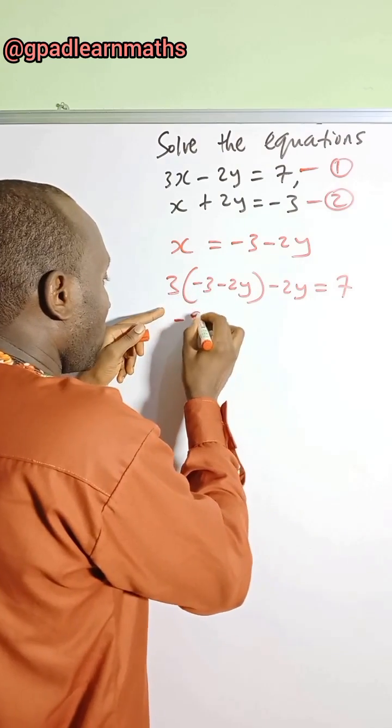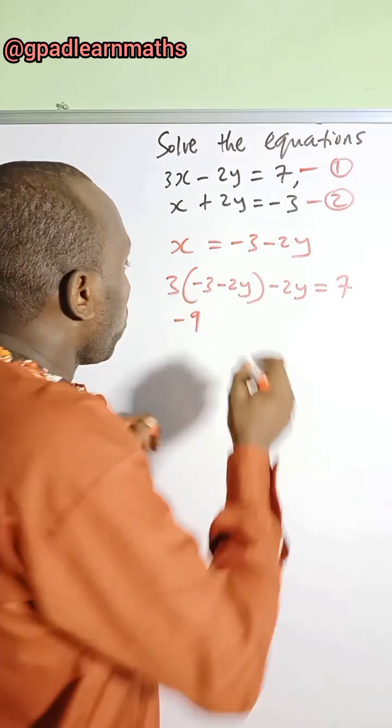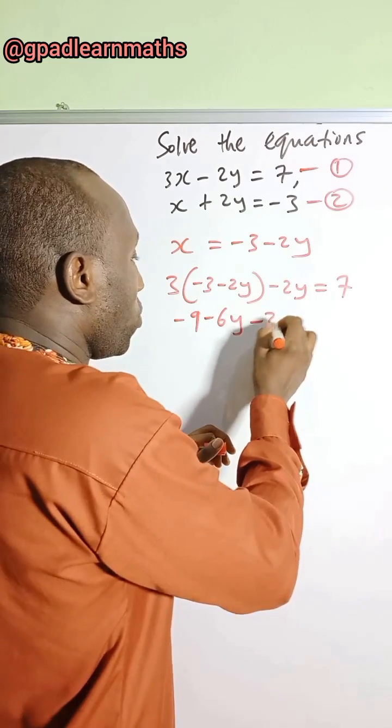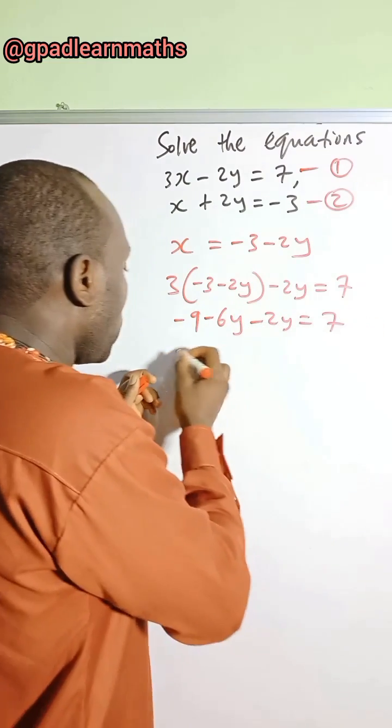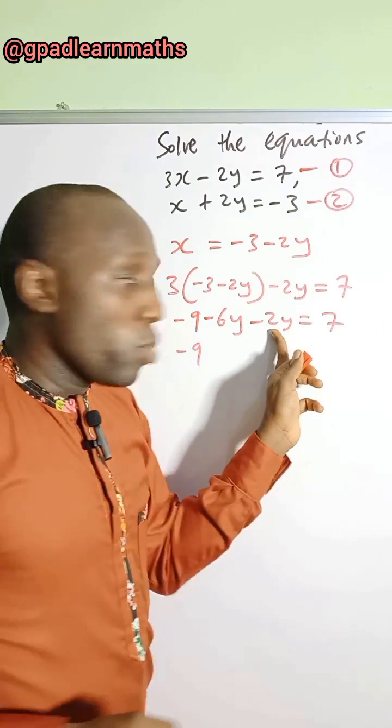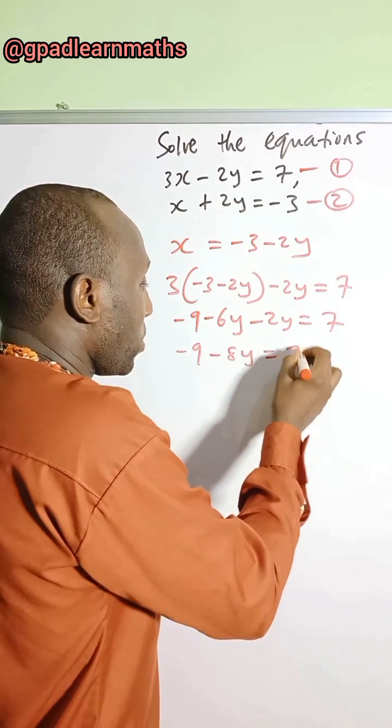3 times minus 3 is minus 9. 3 times minus 2y is minus 6y. And this is minus 2y is equal to 7. So minus 6y minus 2y will give you minus 8y. That is equal to 7.